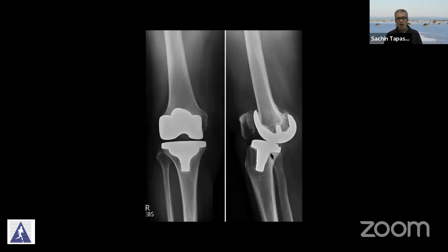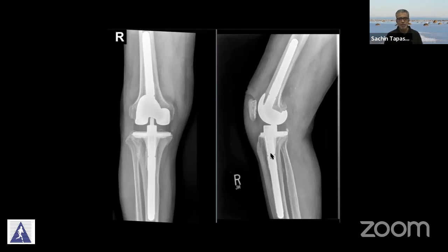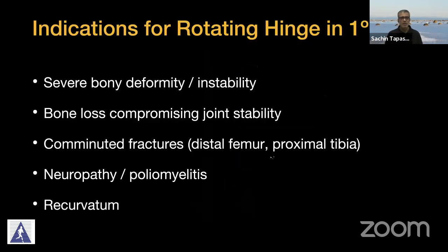Here is one example of a patient who had a primary knee done in poliomyelitis. Unfortunately, the surgeon did not recognize the amount of hyperextension and the poor soft tissues. This led to the whole knee feeling completely unstable and required revision to a rotating hinge type of prosthesis. To reiterate, indications for a rotating hinge in the primary scenario: bone loss, severe bone deformity, fractures, neuropathic joints such as poliomyelitis, and advanced recurvatum.